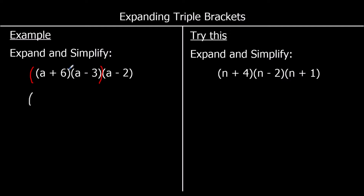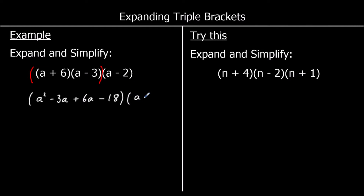So a times a is a squared. a times negative 3 is negative 3a. 6 times a is 6a. And 6 times negative 3 is negative 18. And I've still got the third bracket on the end, so I'm just going to write that at the end.